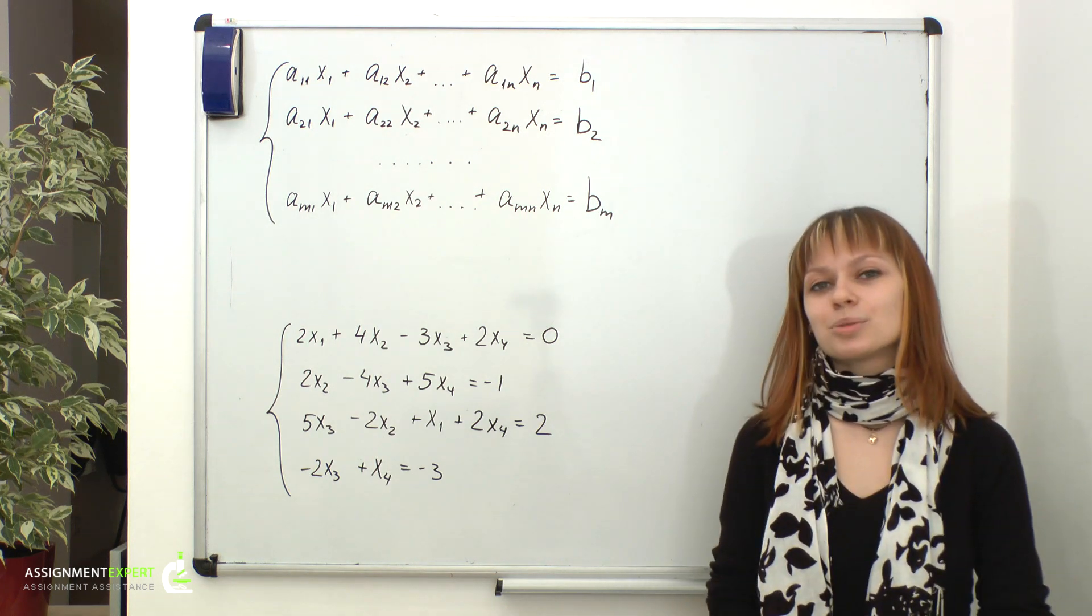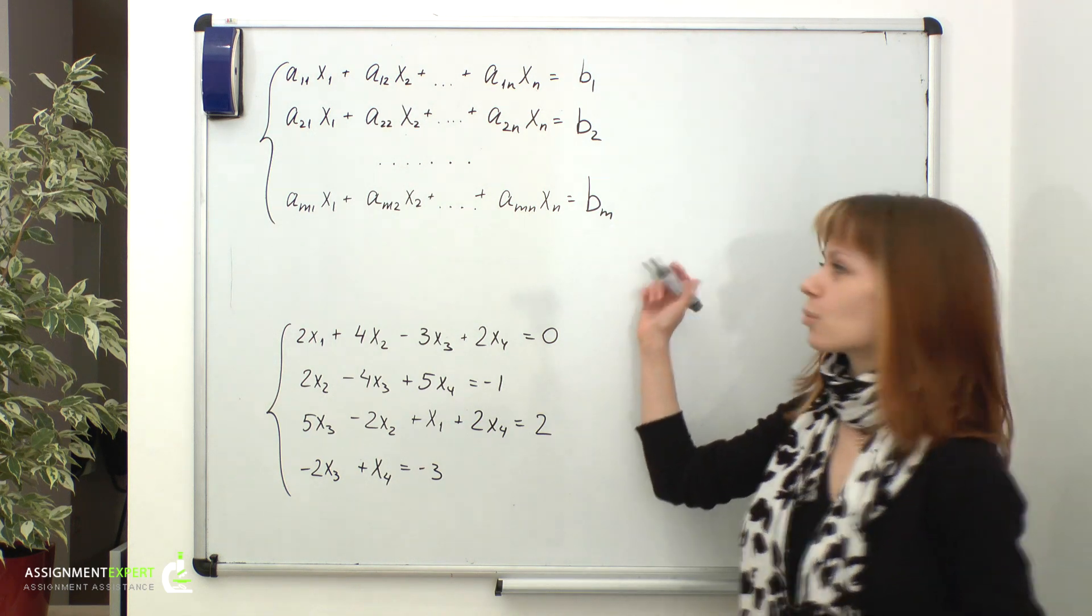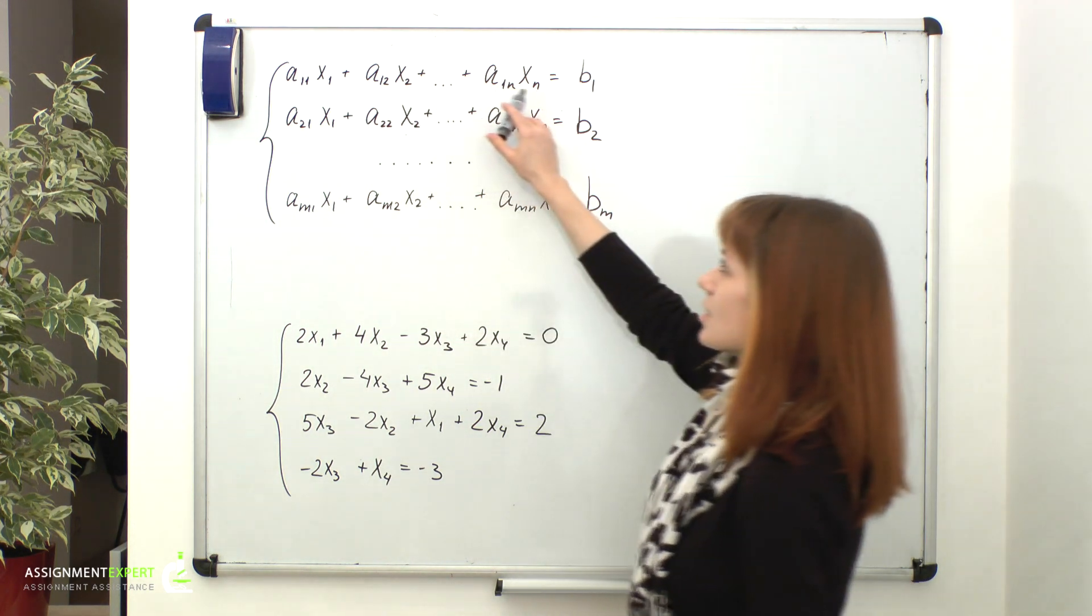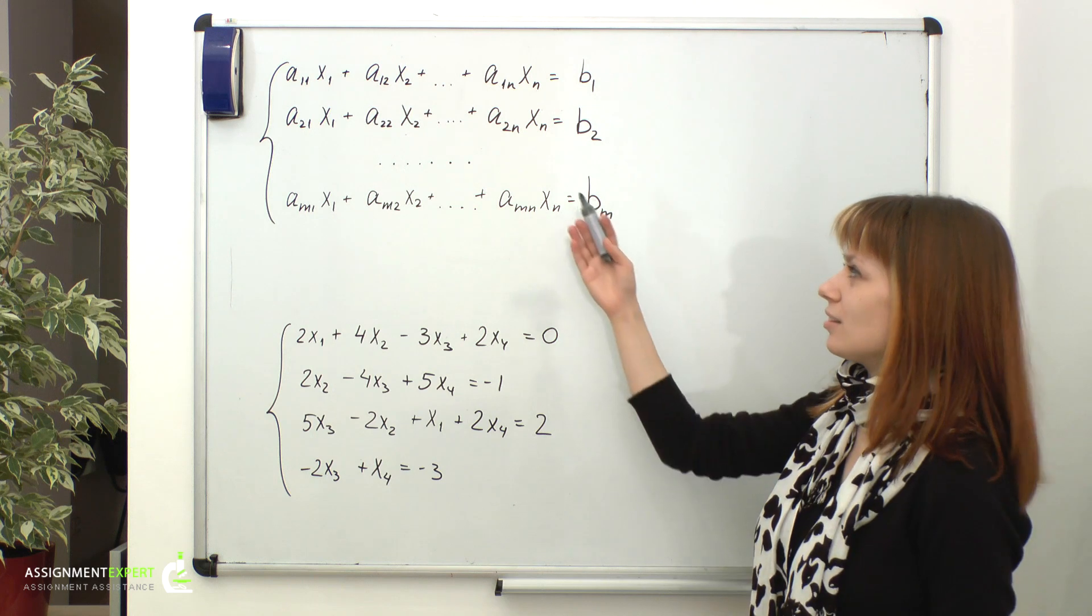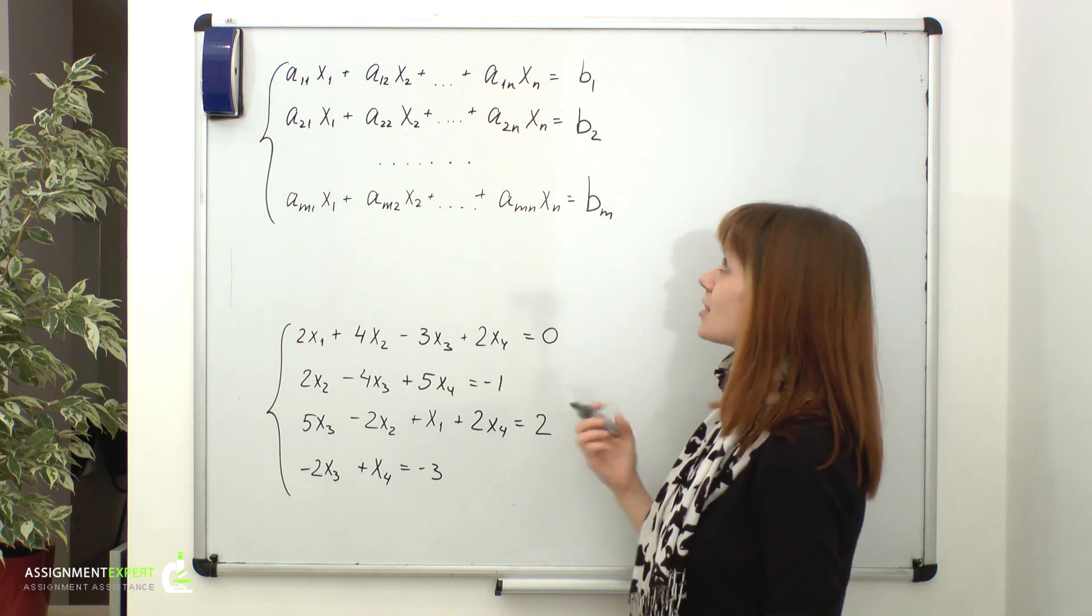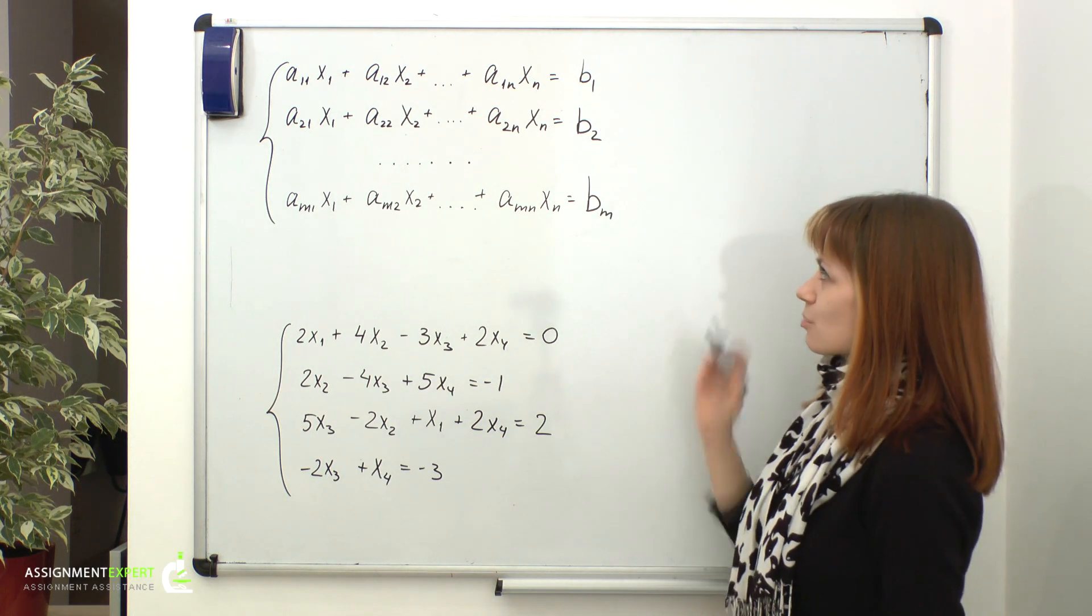Let's consider a system of linear equations in the following form, where x1, x2, xn are unknowns, aij are coefficients, and b1, b2, bm are free terms.